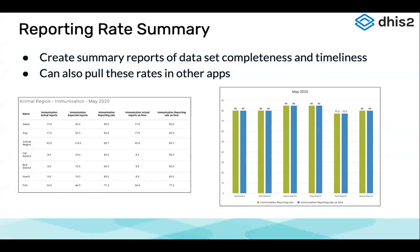Within the data set report, we can aggregate and pull out numbers for a higher level than where the data was captured. Then we have the reporting rate summary, which is able to show us dataset completeness and timeliness based on what was set in the system — how many reports were submitted, how many were expected, and how many were submitted on time.